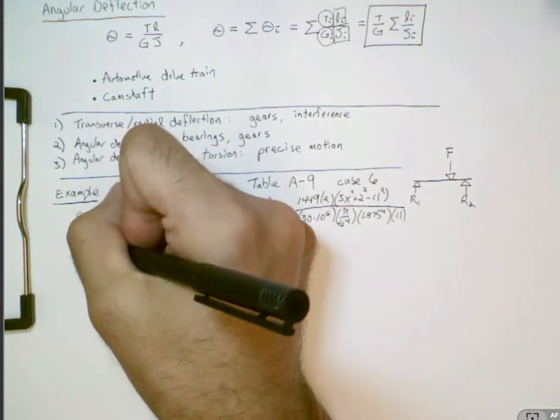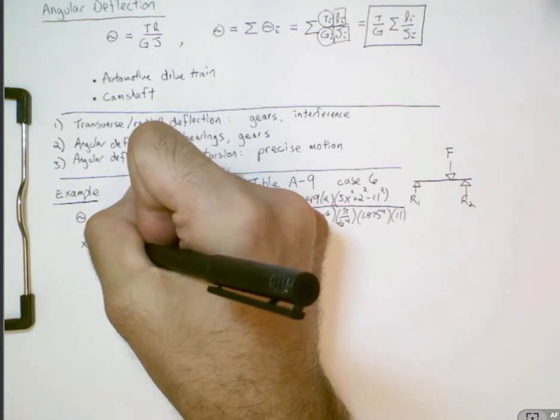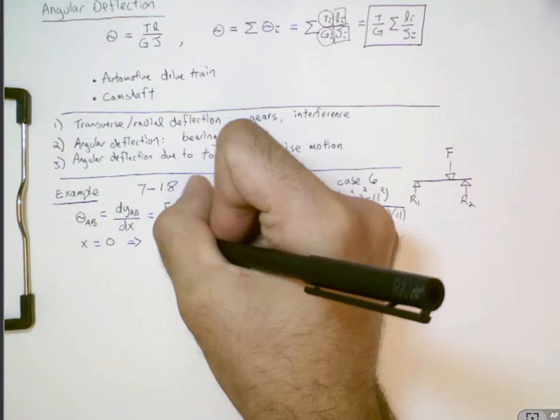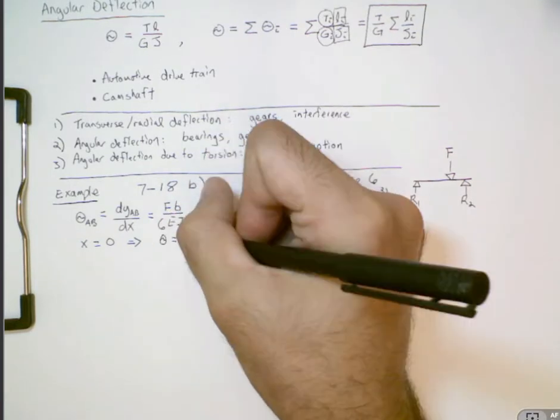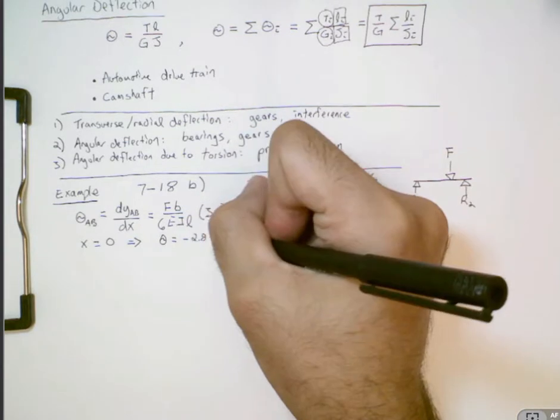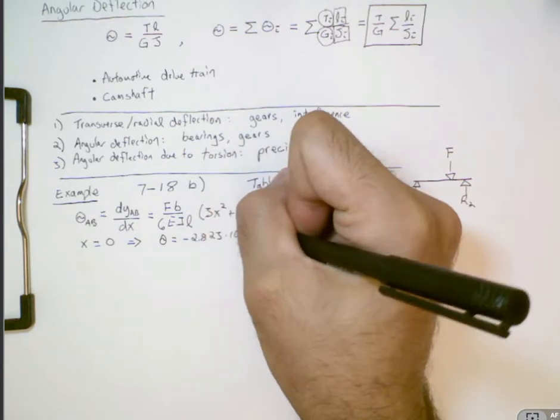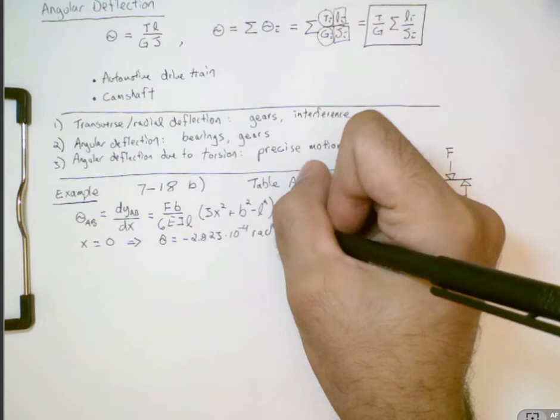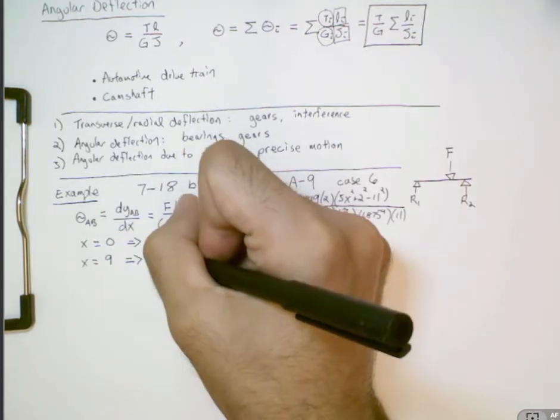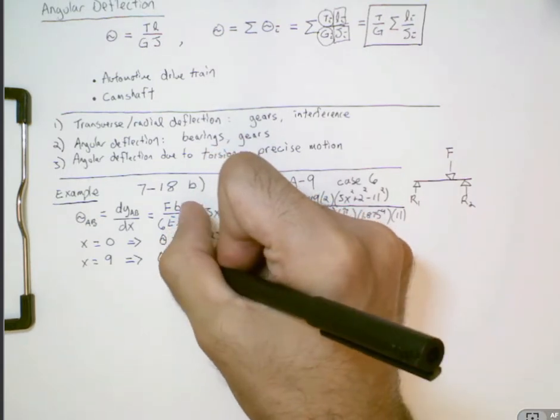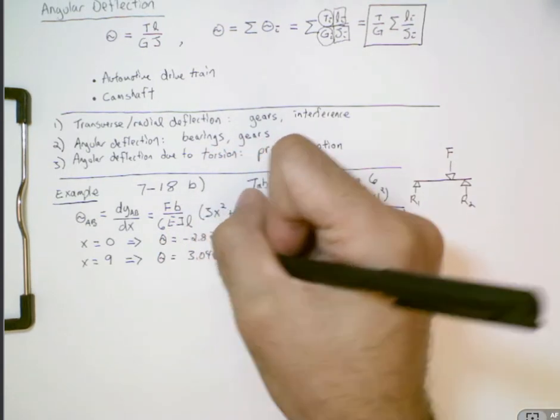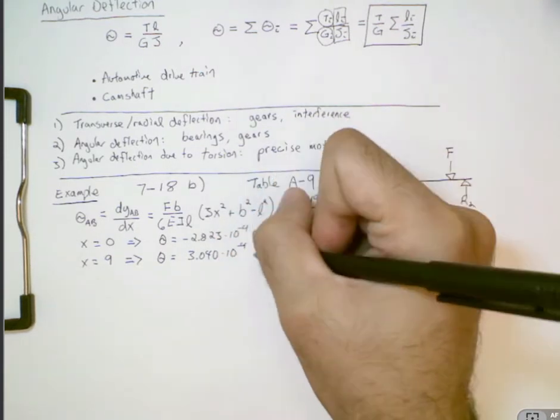And so if we were to plug in values for x, if we had x equals 0, then we would discover that the angle, the slope, that's going to be minus 2.823 times 10 to the minus fourth radians. And then at x equals 9, this is where the gear is, the angle is going to be 3.040 times 10 to the minus fourth radians.